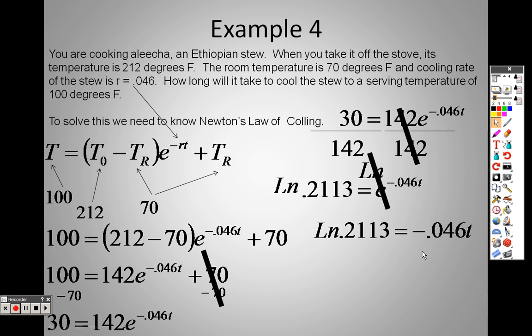So to solve for T, I would divide both sides by negative 0.046, and that cancels out over there, giving us 33.79. So we find out that T is roughly 33.79.